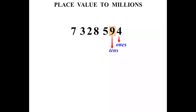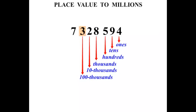The 9 is in the tens place. The 5 is in the hundreds place. The 8 is in the thousands place. This 2 is in the ten-thousands place. The 3 is in the hundred-thousands place. And finally, this 7 is in the millions place.